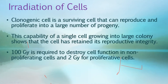A clonogenic cell is a surviving cell that can reproduce and proliferate into a large number of progeny. When we fail to eliminate all cancerous cells during treatment, surviving clonogenic cells can repopulate and cause tumor recurrence — this represents treatment failure. The capability of a single cell to grow into a large colony shows it has retained reproductive integrity, meaning we failed to damage its DNA sufficiently.